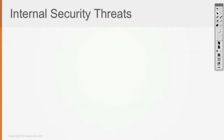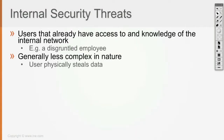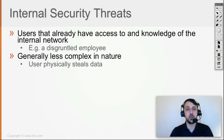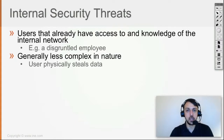Internal security threats require users to have physical access to the network and knowledge of the internal network. It's not enough to have physical access if you don't know what you're looking for. One of the most important steps in network security is to make sure proper countermeasures are implemented so that attackers don't have physical access to the network, because if that happens, pretty much the whole network is compromised.